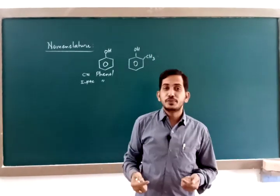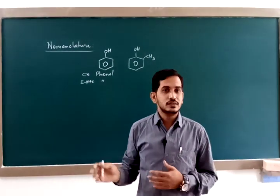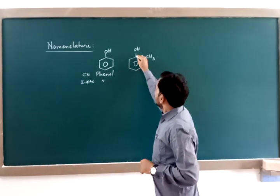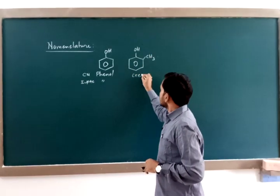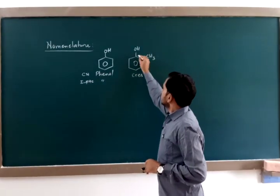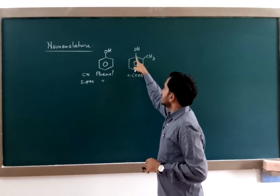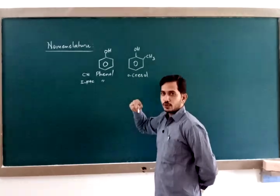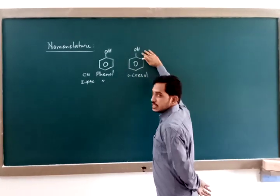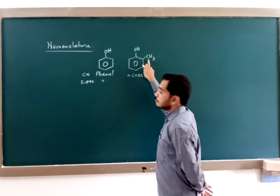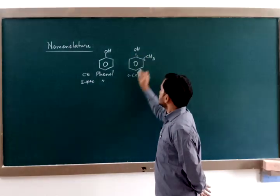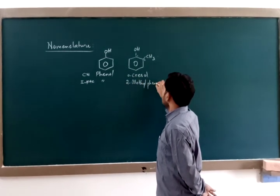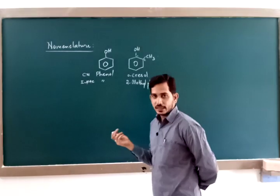We know that the functional group should be given preference over alkyl groups. So if we have phenol with a methyl group at the adjacent position, the common name is ortho cresol, because the next adjacent position is ortho. According to the IUPAC name, the base is phenol and this compound is 2-methylphenol.